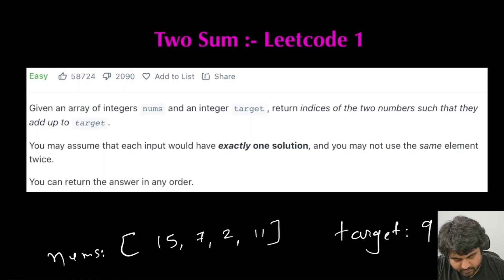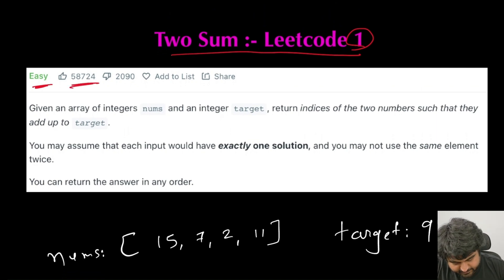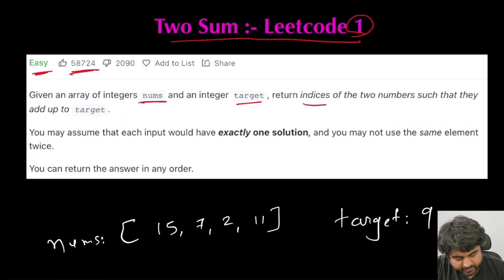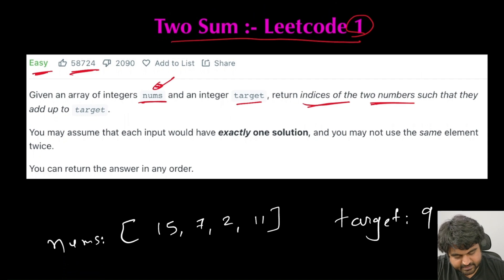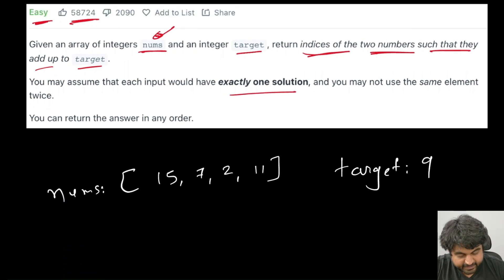The LeetCode problem we are going to solve is called 2Sum. This is the number one problem on LeetCode — an easy problem and also the most liked. We are given an integer array nums and an integer called target. We need to return the indices of the two numbers within the nums array such that they add up to the target value. We are guaranteed there is always exactly one solution, and we can return the indices in any order.